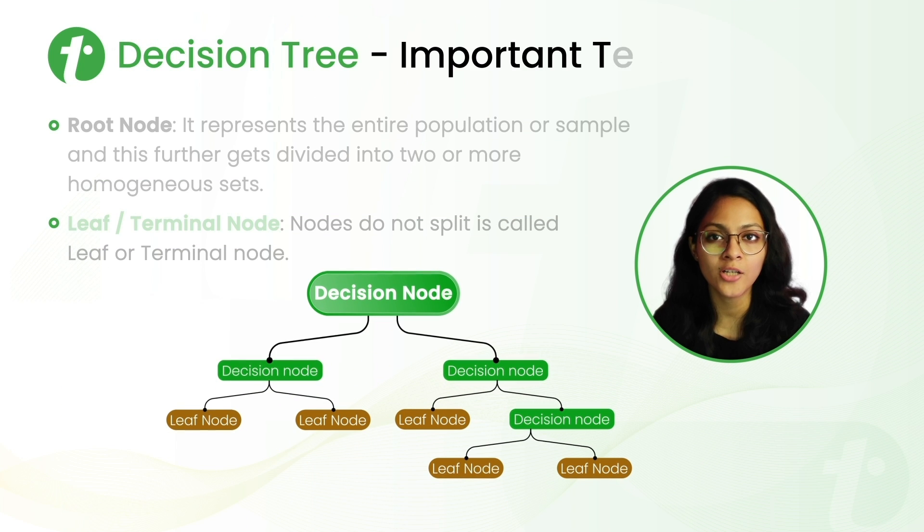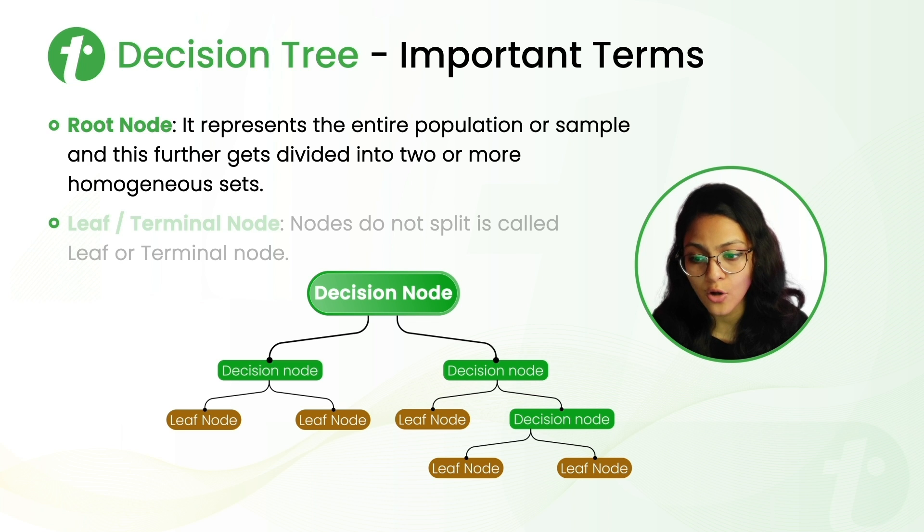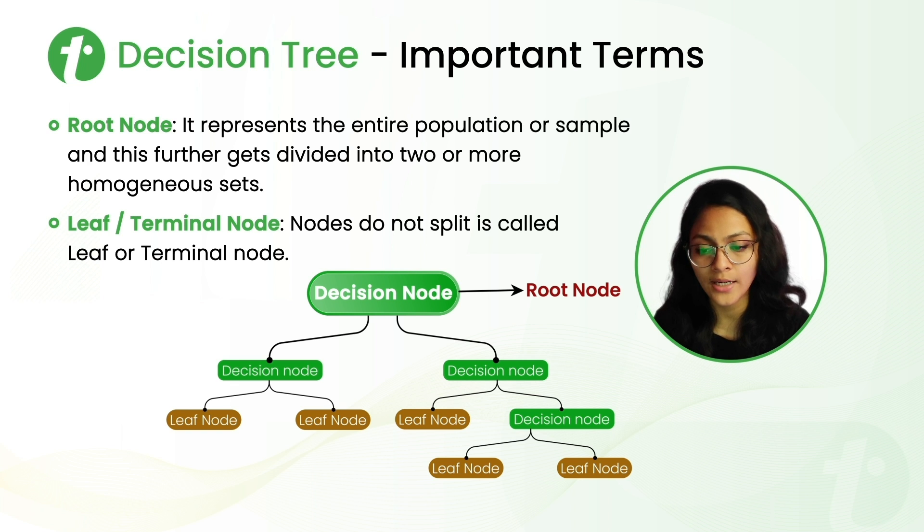We fit a regression model to the target variable using each of the independent variables. Now let's discuss some important terms of decision tree. First is root node. The first node of the tree that represents the entire population or the sample is called the root node. Leaf node or terminal node: the nodes that do not split further are called leaf node or terminal node. And also, leaf node carries the final conclusion or decision in the tree.